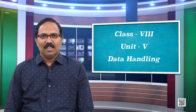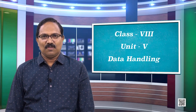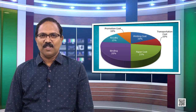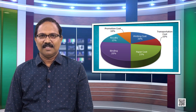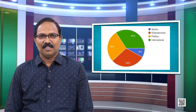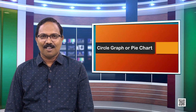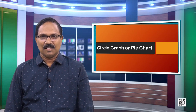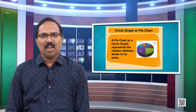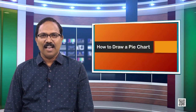Let us learn one more graphical representation of data. Look into these graphs — they are all circular in shape. Such graphs are called circle graphs or pie charts. A pie chart or circle graph represents the relation between the whole and its parts. Let us learn how to draw a pie chart. In order to draw a pie chart, we need to understand certain aspects.